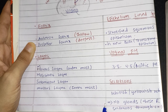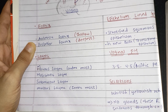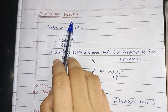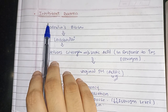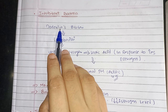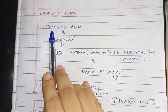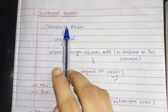Now coming to its secretions. The secretions are whitish or yellowish, but these are not actually the secretions of the vagina because the vagina has no glands. Whatever secretion you see coming out through the vagina is not actually the secretion of the vagina — it is the secretion from the cervical glands from the cervix. Now, regarding the inhabitant bacteria: as you know, vagina has bacteria which prevent us from infection. One of the bacteria is Doderlein's bacteria, which is a lactobacillus.